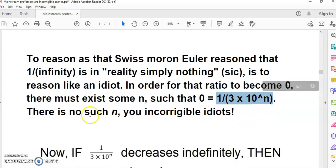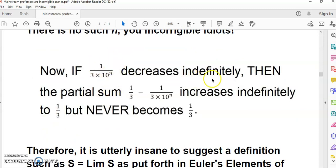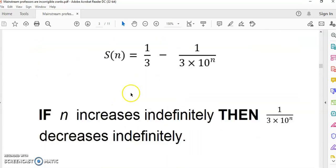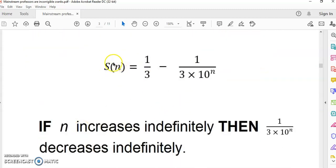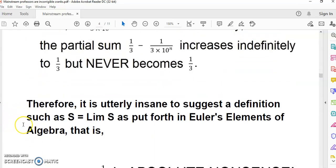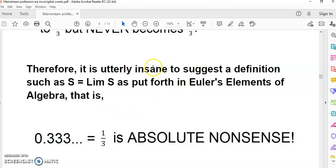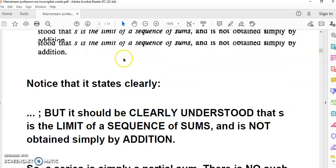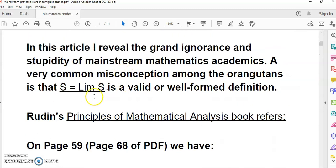If this decreases indefinitely, then the partial sum increases indefinitely to 1/3 but never becomes 1/3. You can't say that the sum to infinity of this expression is 1/3 because you can't plug infinity in there as a number. There's no such thing - infinity is a super task, it's nonsense. It's utterly insane to suggest a definition such as S = Lim S in Euler's Elements of Algebra.